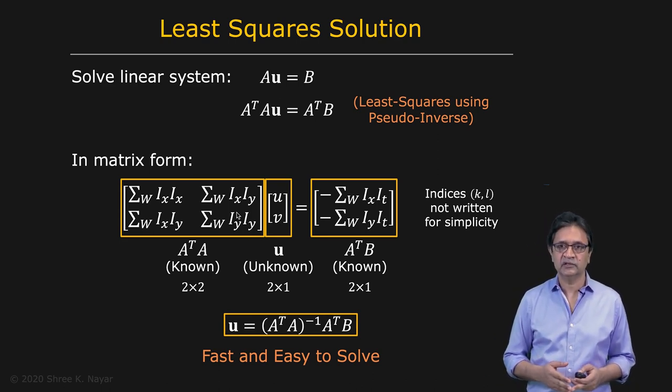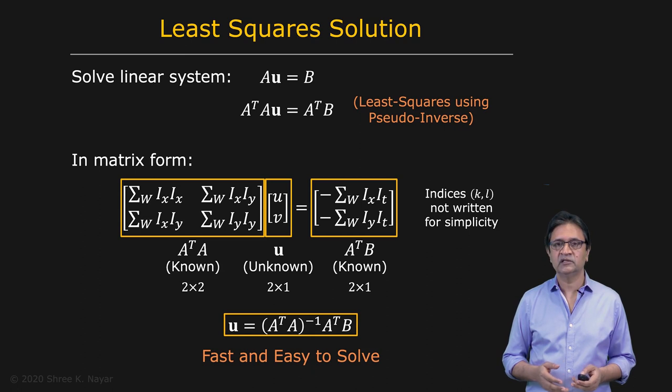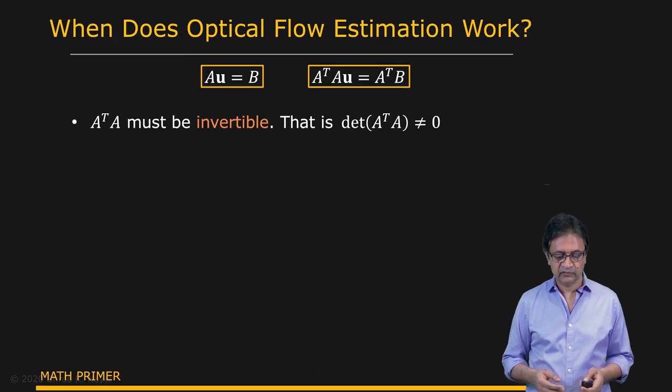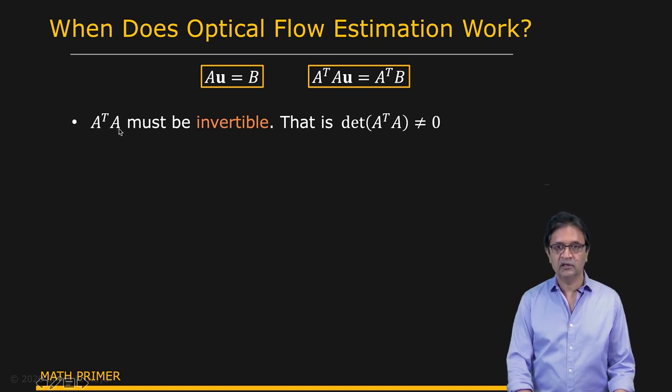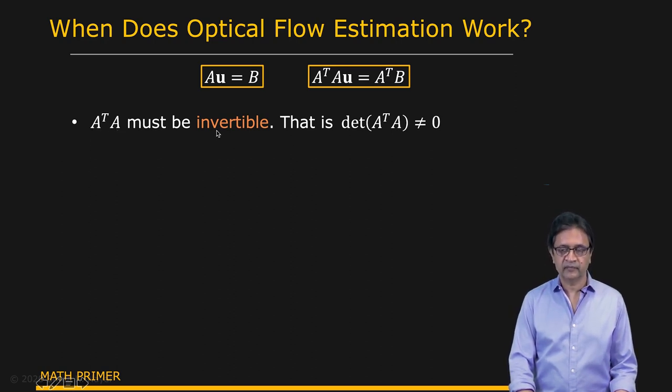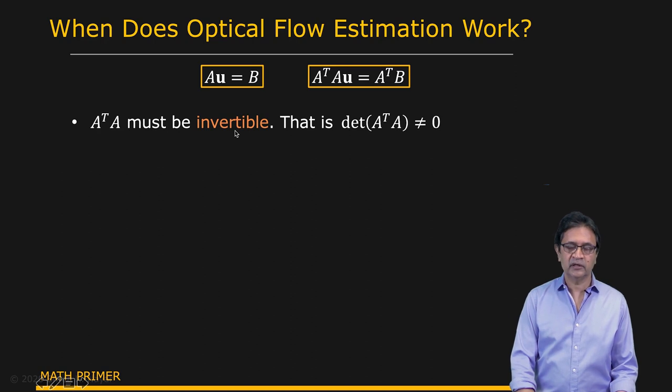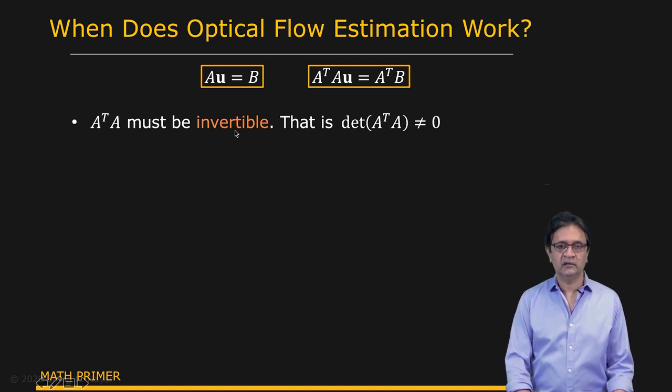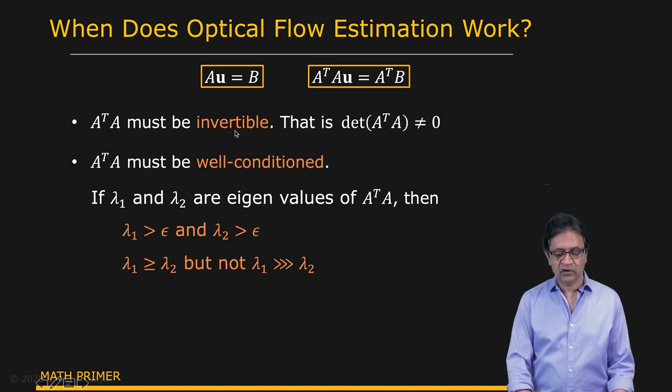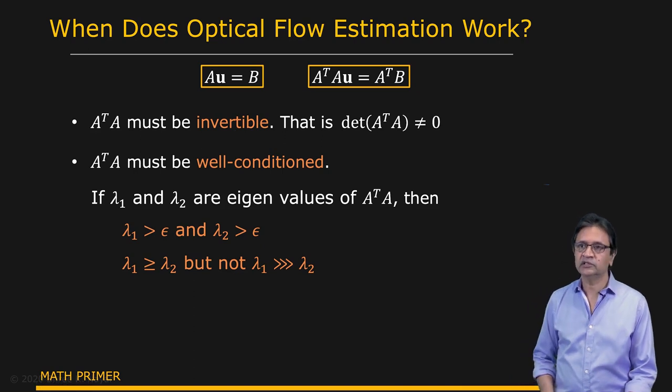So this is a very simple thing to do. And the question to ask is, when does this not work? When do we have problems? We know that it's not going to work when A transpose A is not invertible. Another way to think about it is that A transpose A is not well-conditioned. So what does that really mean?